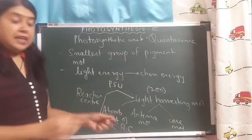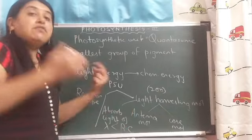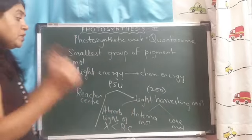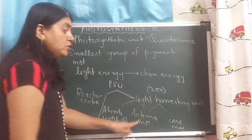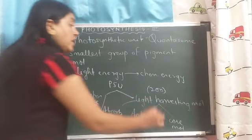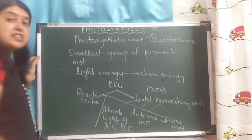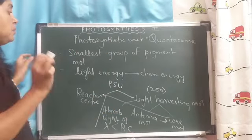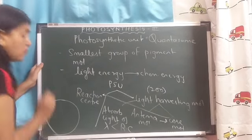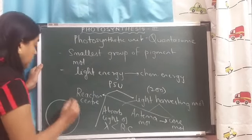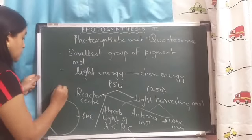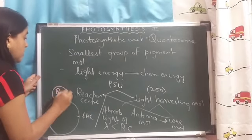The energy which they have captured is transferred by resonance — first from antenna molecules to core molecules, and then core molecules transfer this energy to the reaction center. Some of these light harvesting molecules are called as LHC. This is the reaction center.